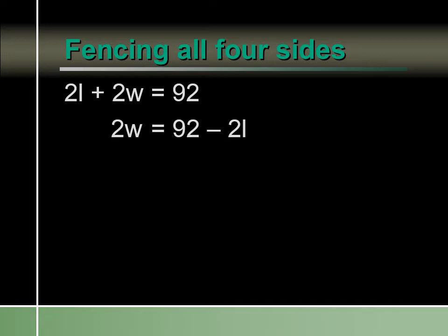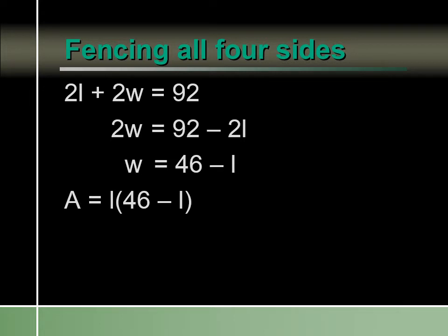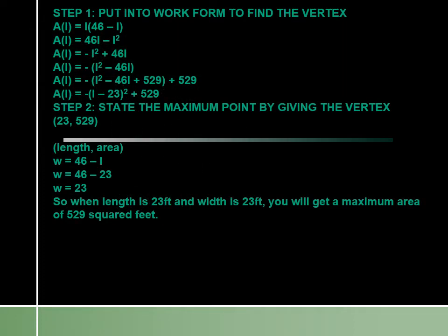We're going to solve for W in terms of length: W equals 46 minus L. When we plug that into our area formula, instead of saying A equals L times W, we can say A equals L times 46 minus L. After completing the square, we subtract 529 inside and add 529 on the outside, giving us the perfect square form: negative times L minus 23 squared, plus 529.